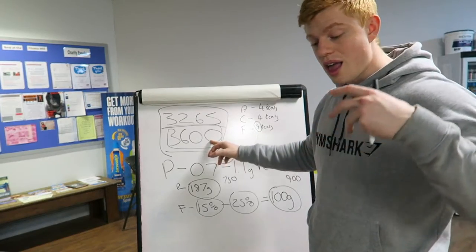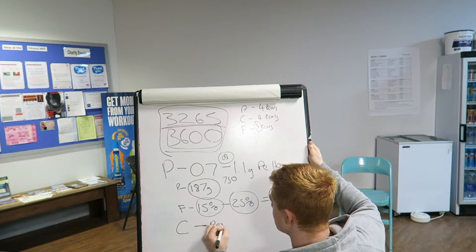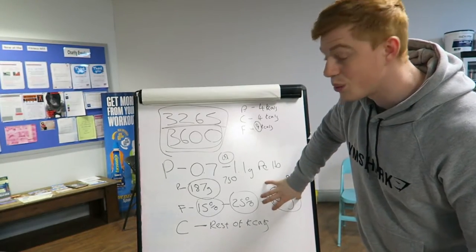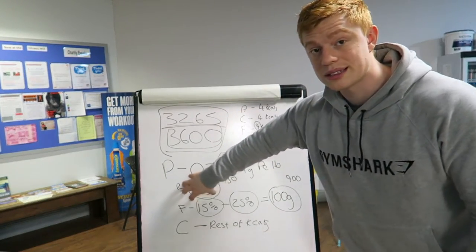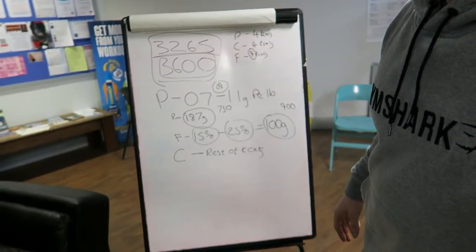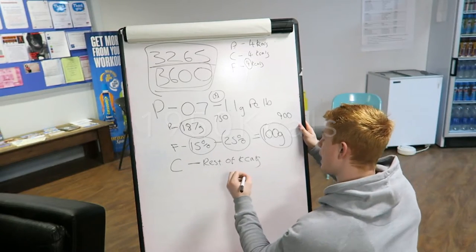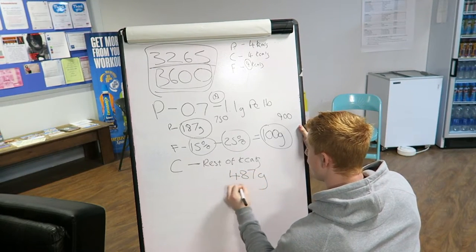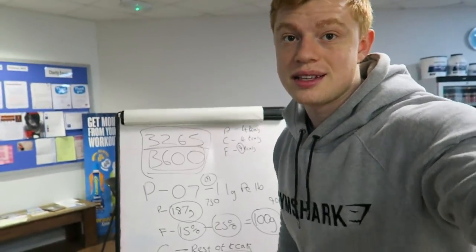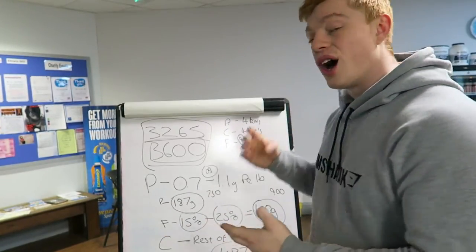When we come to carbohydrates, it's the rest of the calories. We take away the amount of calories from fat and protein that we've already worked out, and then all of that divided by 4 works out to 487 grams of carbs. So that's the amount of carbs I'll be eating per day: 487 grams of carbs, 187 grams of protein, and 100 grams of fat. That's how I've worked out my macros and calories for this bulk.